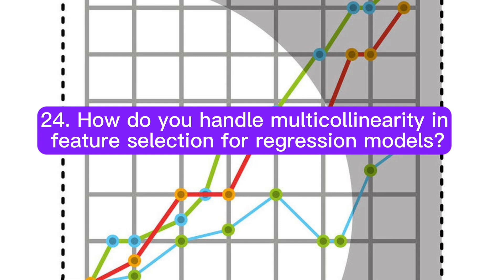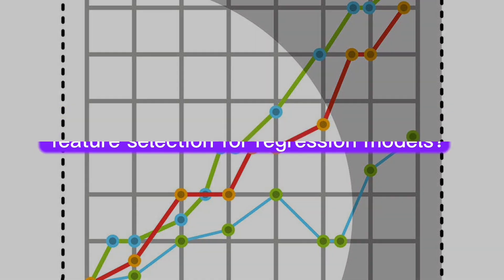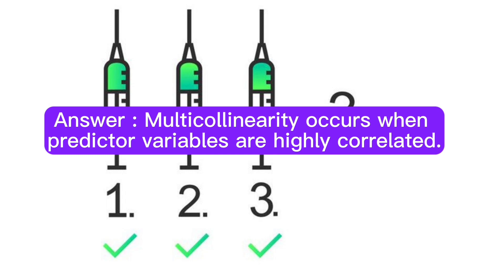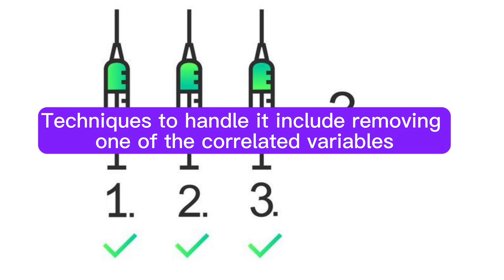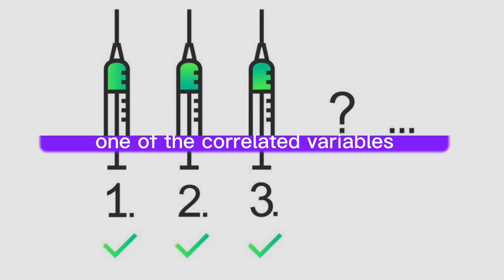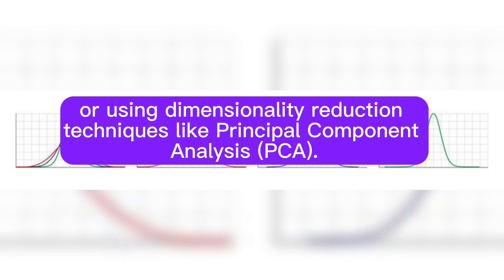Question 24: How do you handle multicollinearity in feature selection for regression models? Answer: Multicollinearity occurs when predictor variables are highly correlated. Techniques to handle it include removing one of the correlated variables or using dimensionality reduction techniques like principal component analysis (PCA).